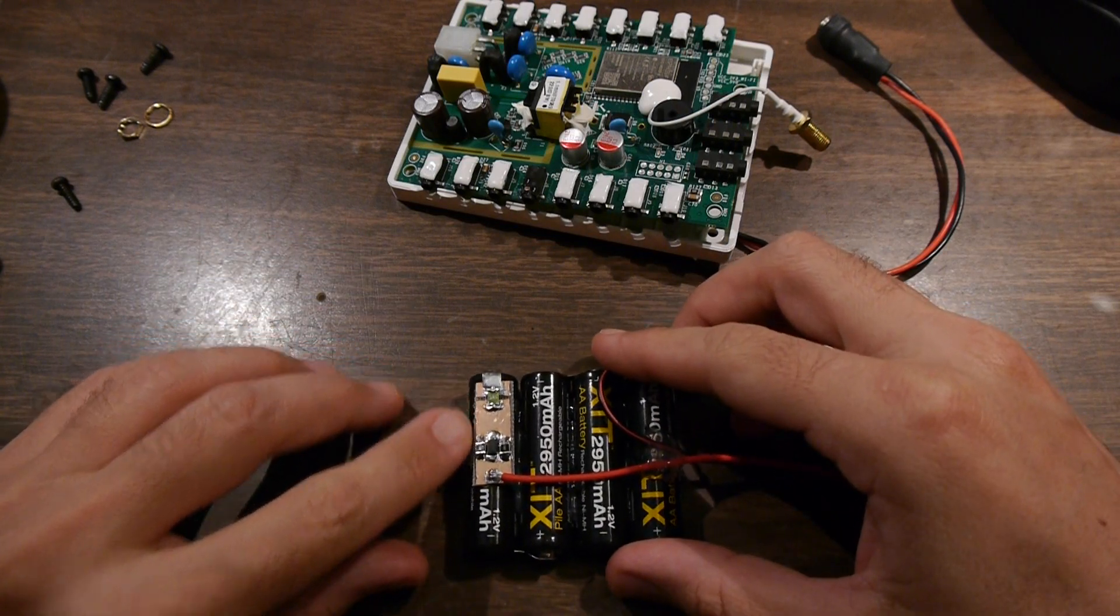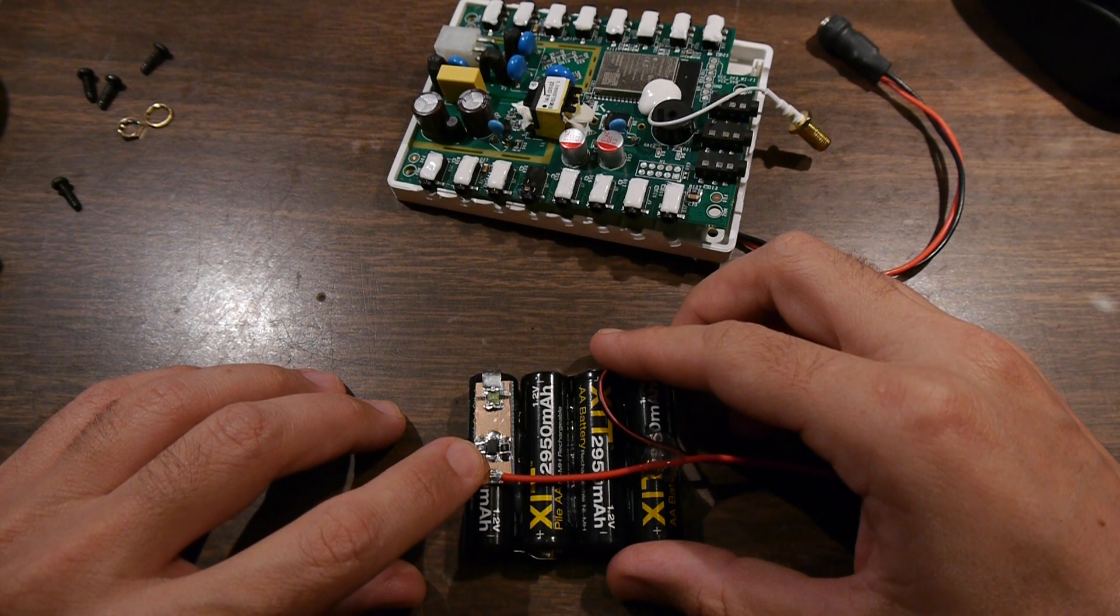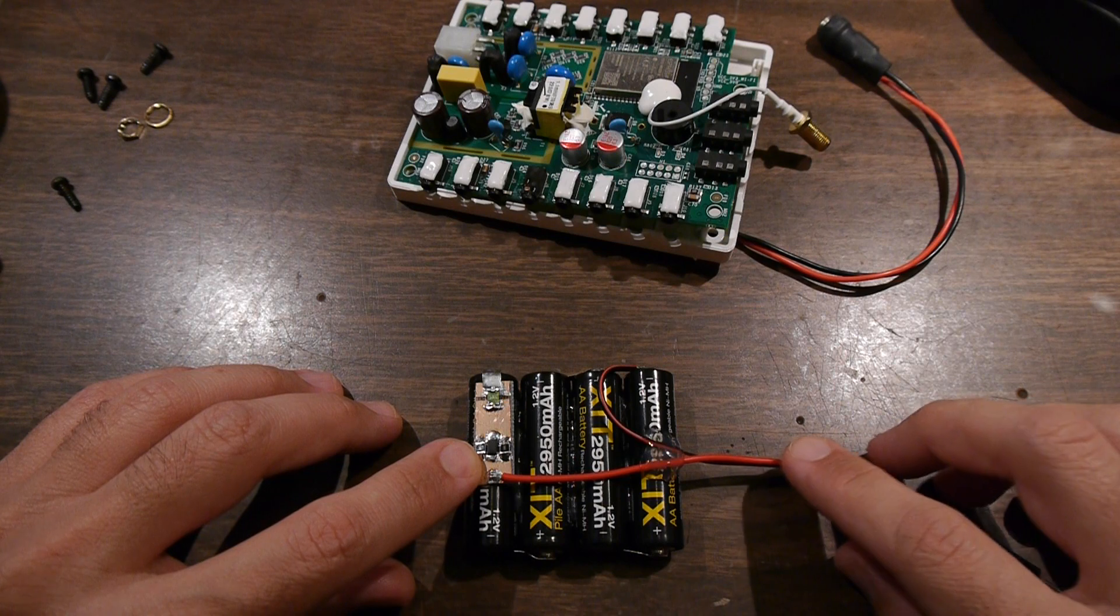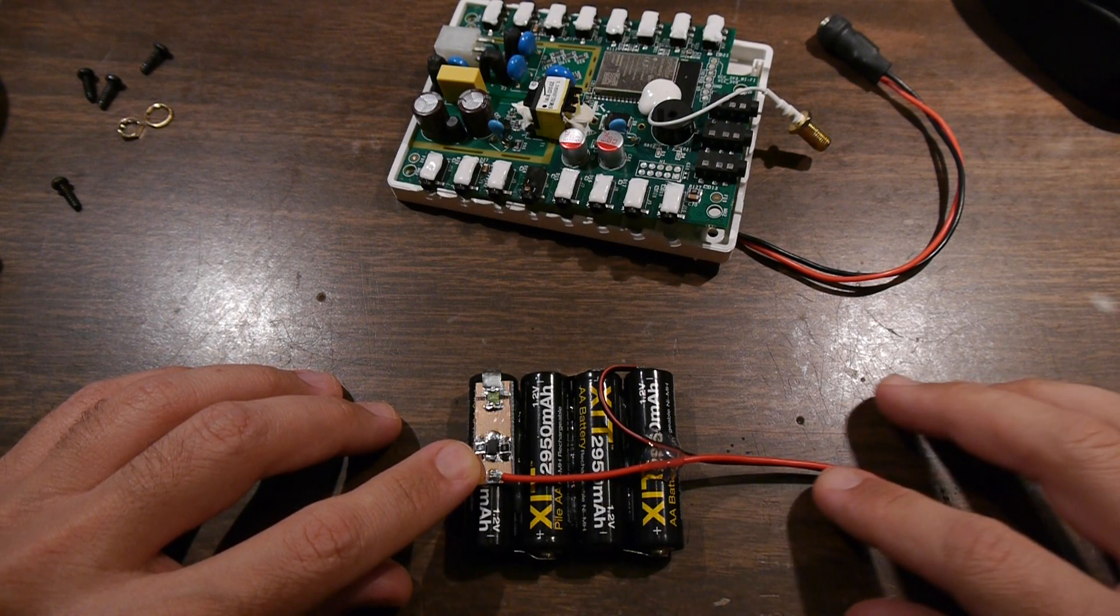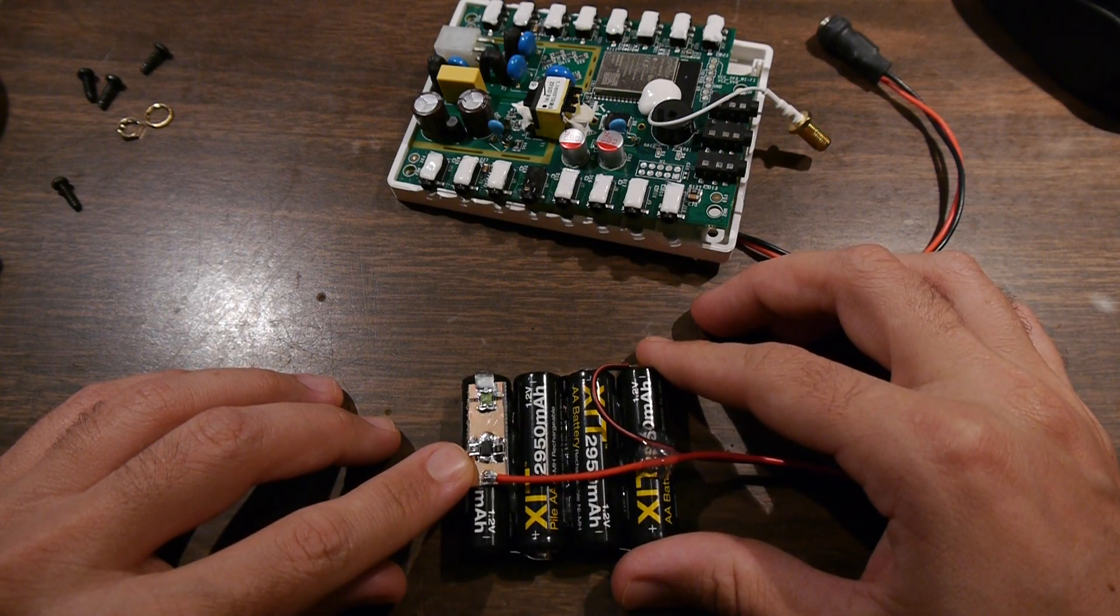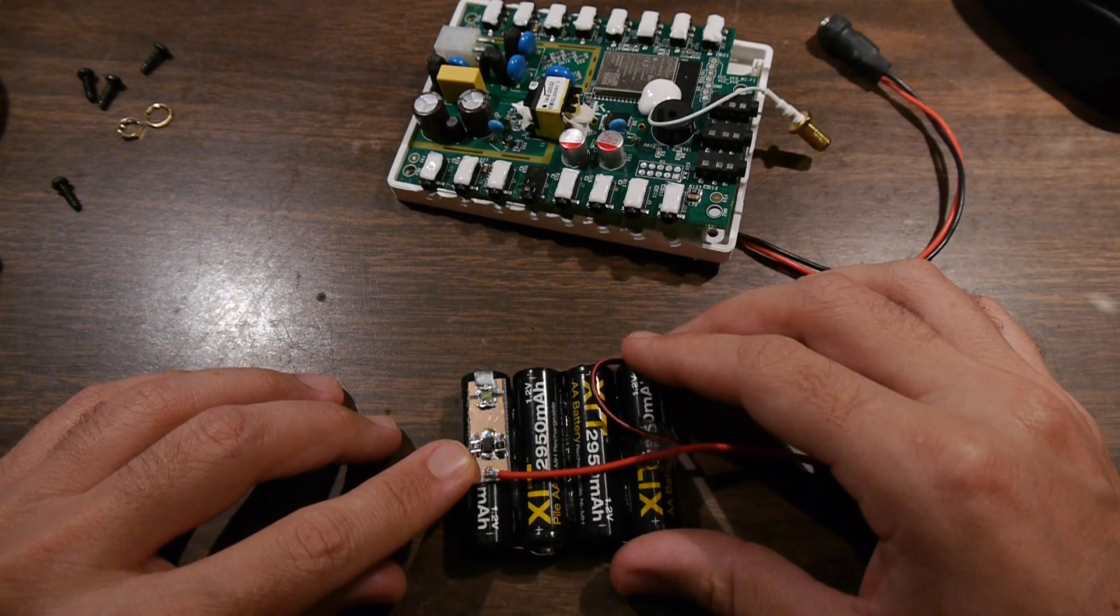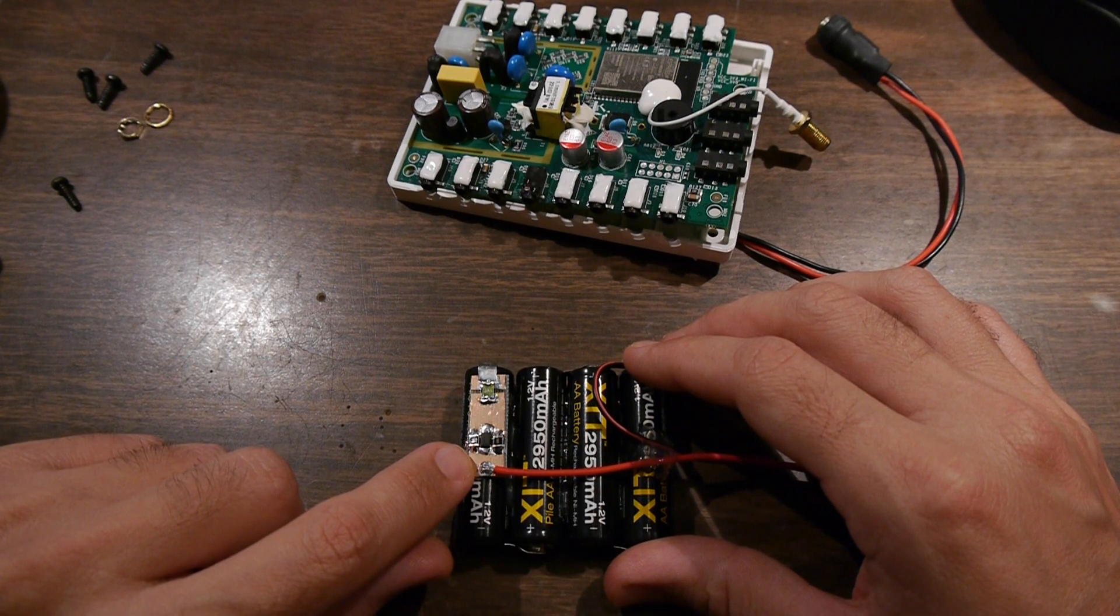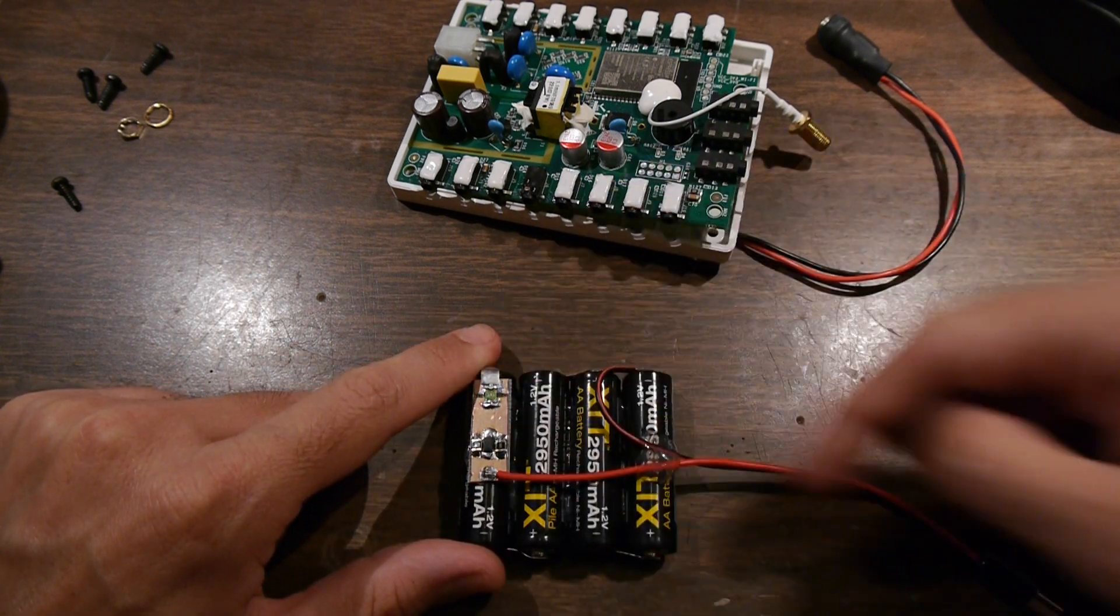Basically a Schottky diode to prevent too much current from flowing back into the battery in case it gets too low after an extended power outage. So basically, current can only flow this way.